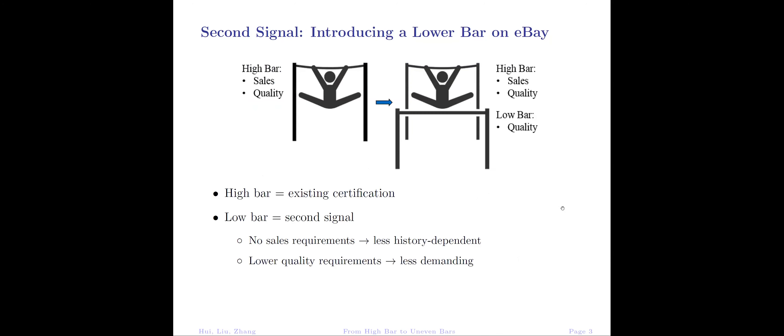In this paper, the second signal is in the form of introducing a lower bar on eBay. Before the policy change, consumers observe whether a seller passes the high bar of certification, which is based on both past sales and past quality.